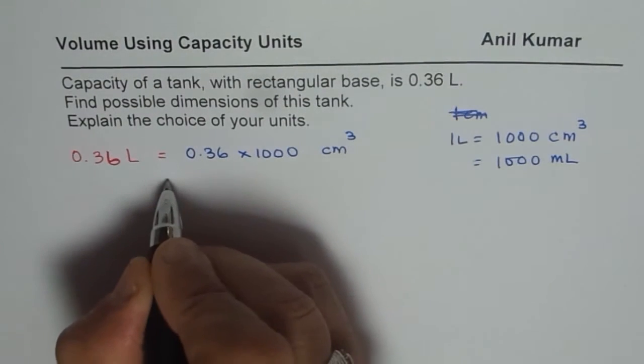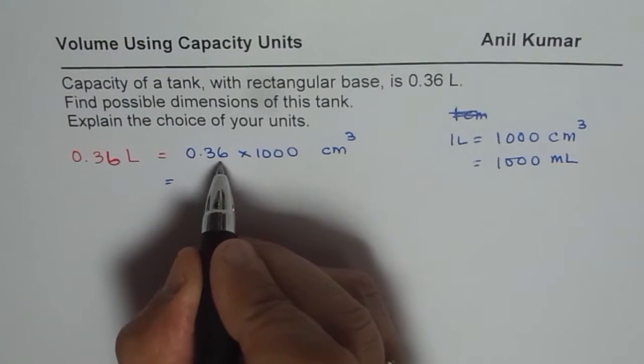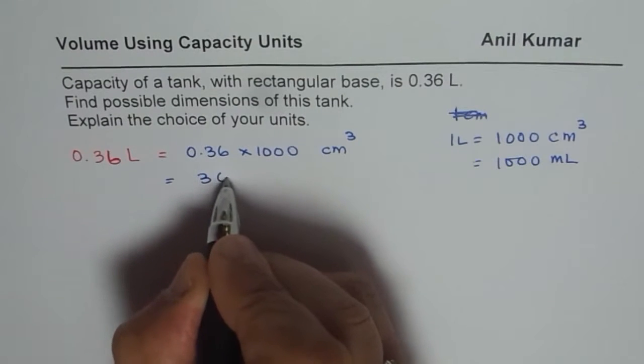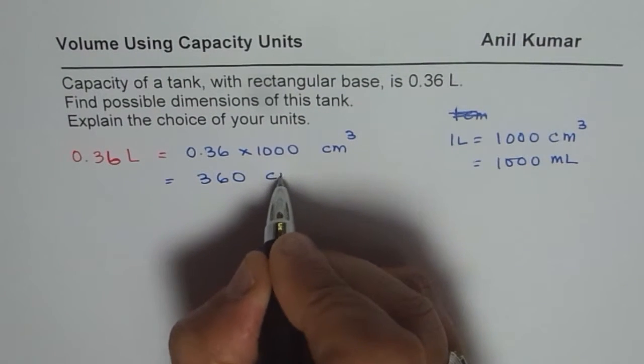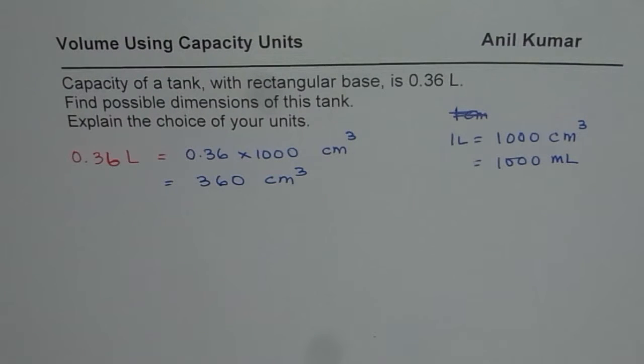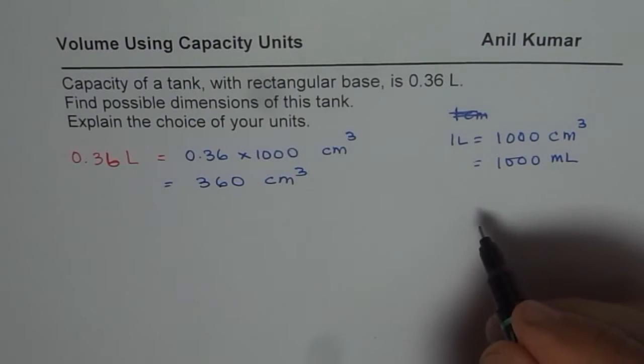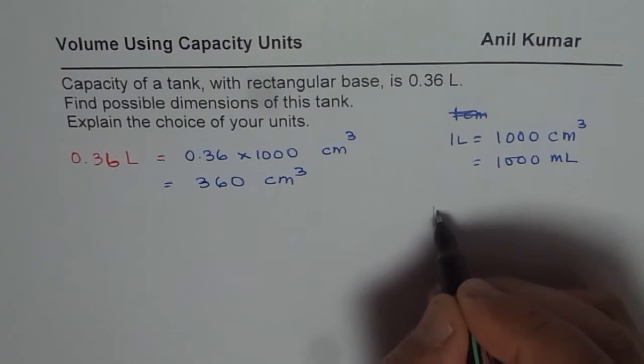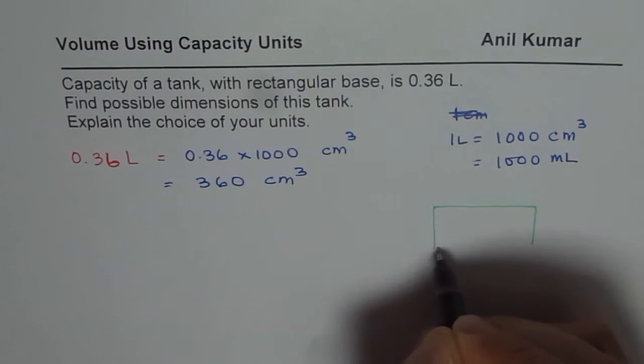So that is, it moves three units to the right, that means 360 centimeter cube. So once you get dimensions in centimeter cube it is easier for us to figure out the rectangular base prism dimensions. So let us consider a tank like this.